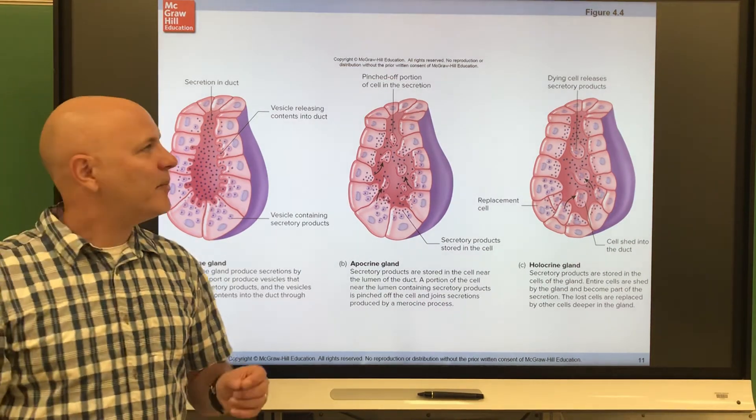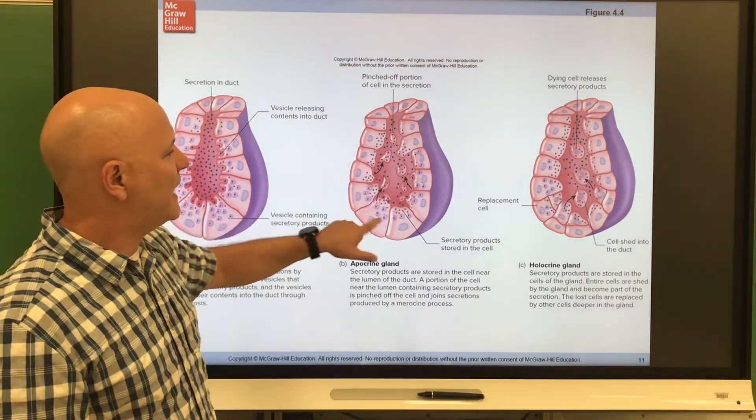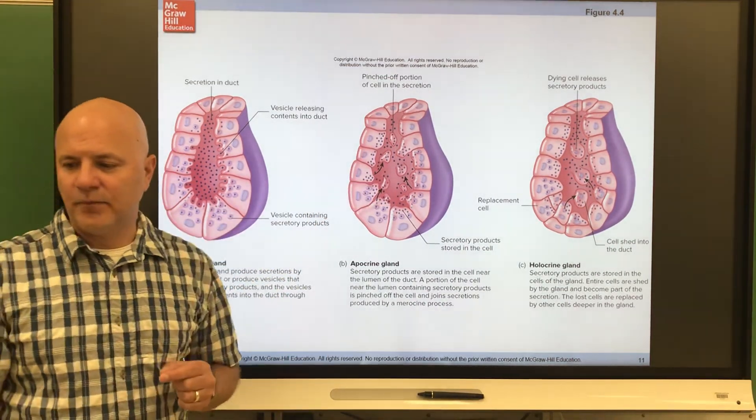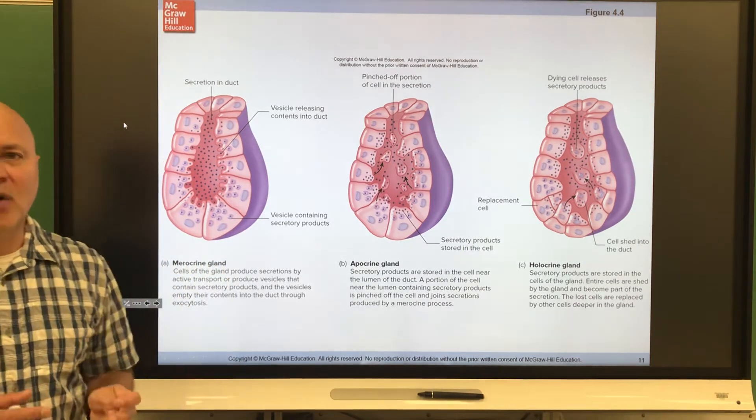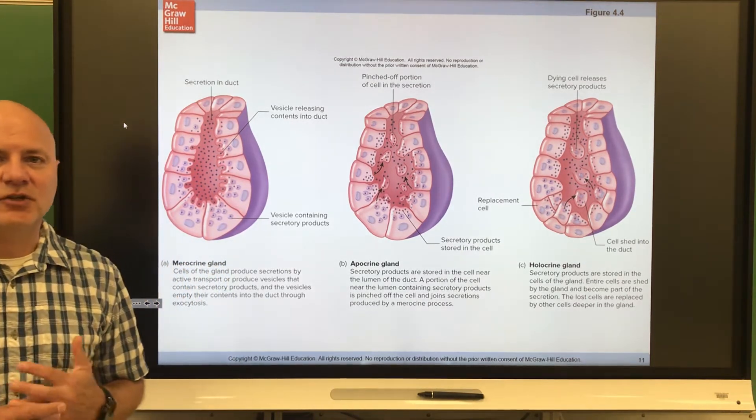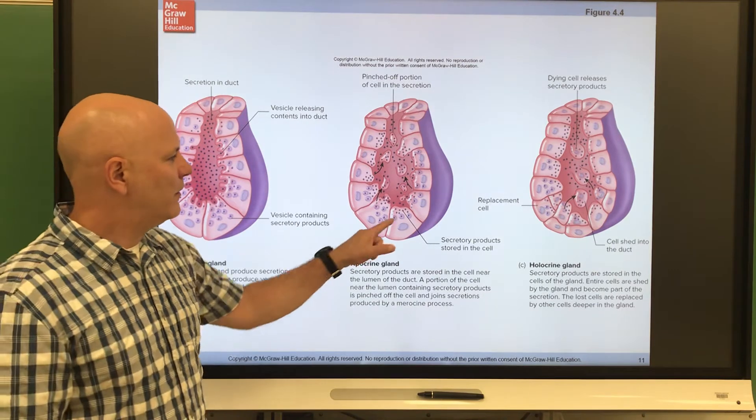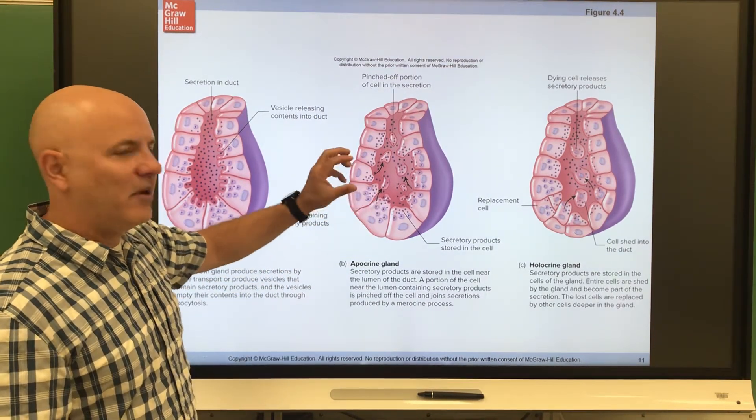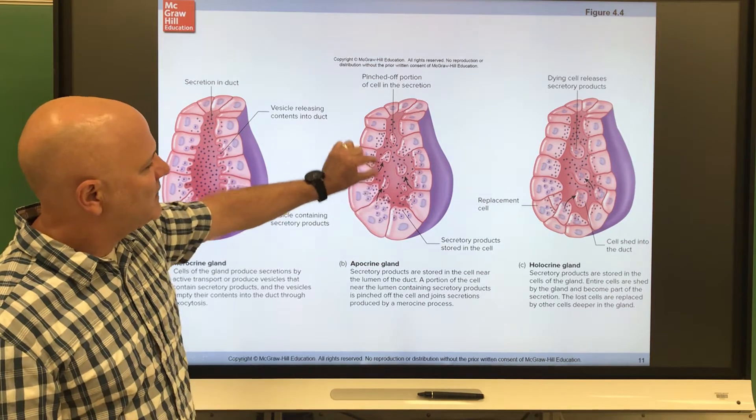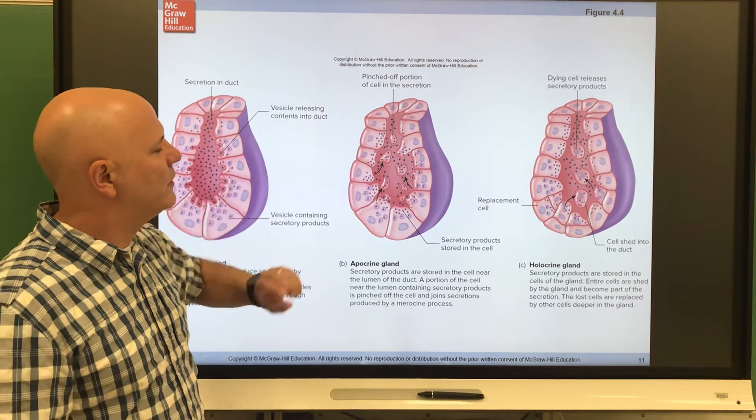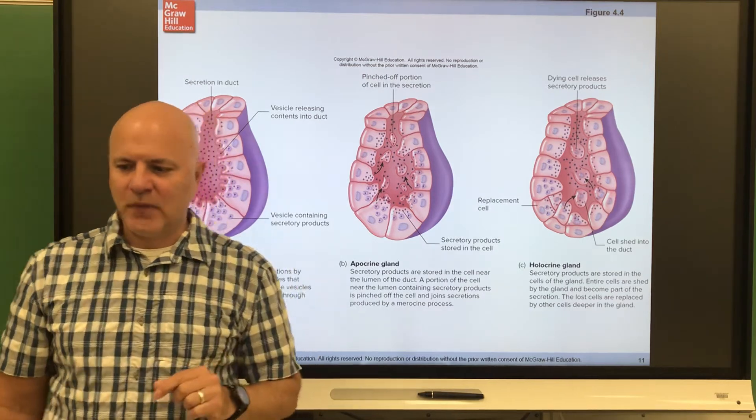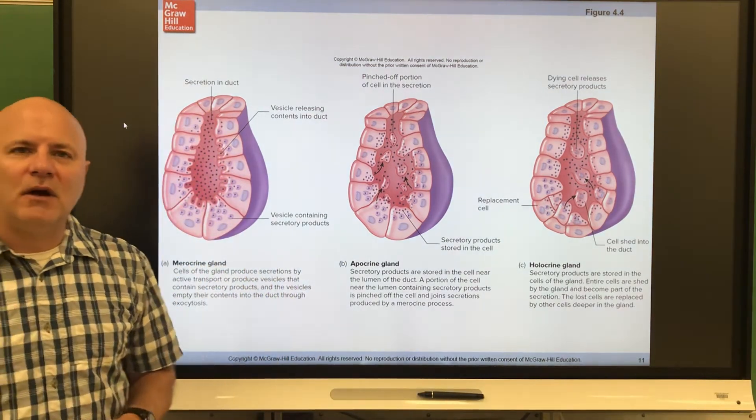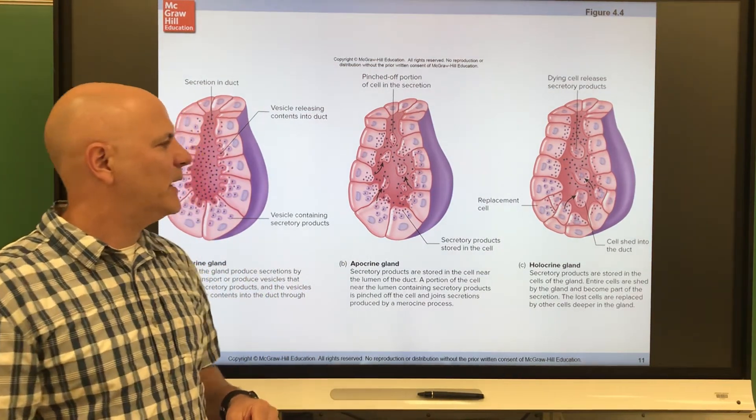The next type are apocrine glands. So these guys here in the middle are apocrine glands. So these are glands that are going to lose small portions of their glandular cell bodies during secretion. So they're going to produce a product in the vesicle just like we did before. But instead of releasing by exocytosis, pieces of the cell break off and those then break up after they're released. So mammary glands are an example of an apocrine gland.